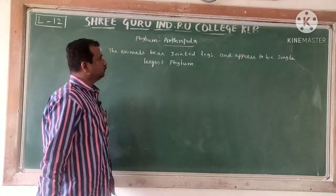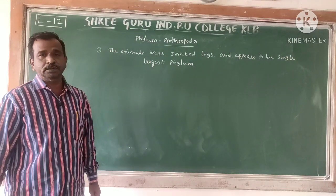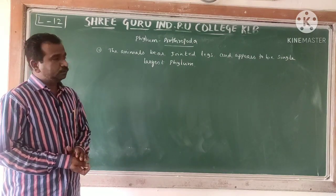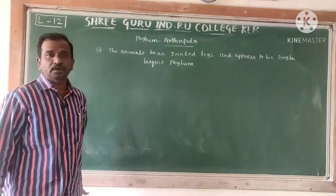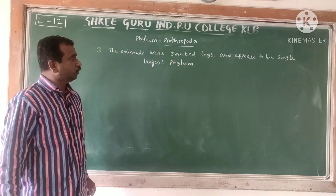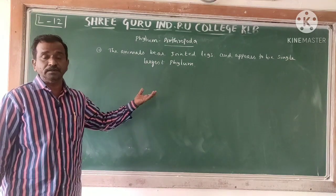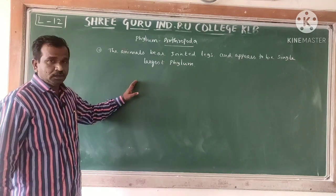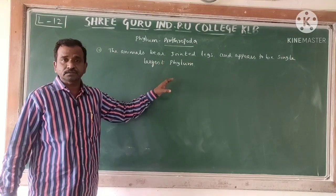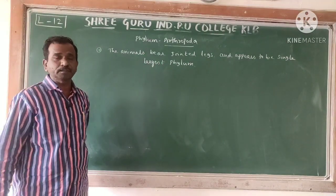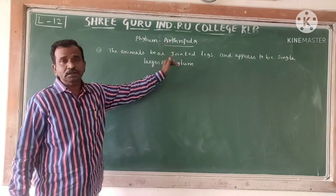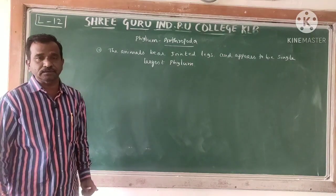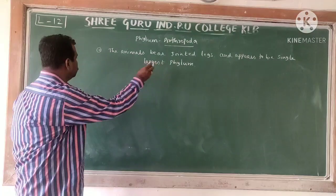An enormous amount of organisms are going to be found in the case of Arthropoda. As you already know, right from insects, several kinds are found. The majority of organisms belonging to Kingdom Animalia are related to Arthropoda, that is why it is the single largest phylum in the animal kingdom.